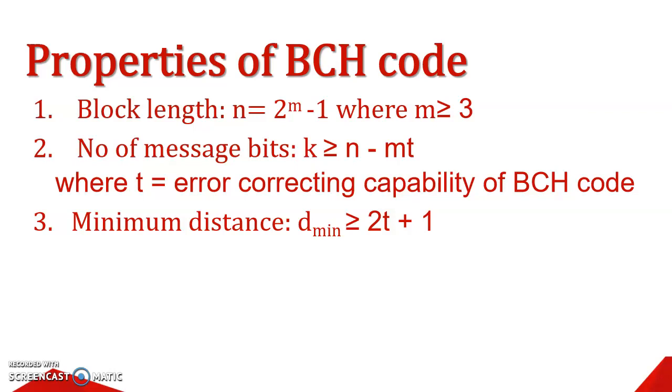Next, we will come to properties of BCH Code. First, what is the block length of any BCH Code? The formula for block length calculation is n equals 2 to the power m minus 1, where m should be greater than or equal to 3 and m is any positive integer.